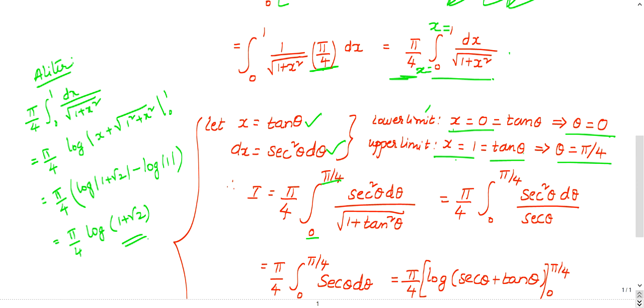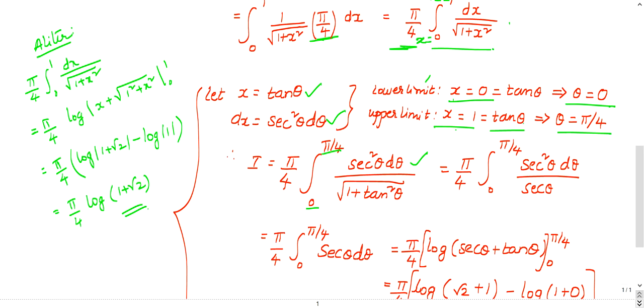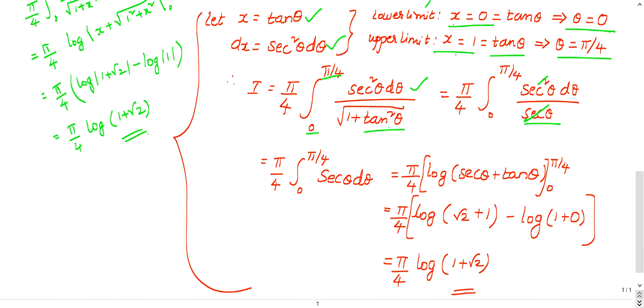So dx is nothing but secant squared theta d theta substituted. Then x is substituted with tan theta, so it becomes x square will be tan squared theta. So 1 plus tan squared theta will be secant squared theta, and the root will be secant theta. So 1 over secant theta and 1 over secant theta will cancel. So it will be integral secant theta d theta, 0 to pi by 4.